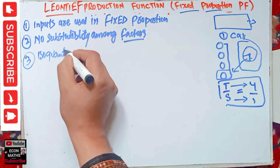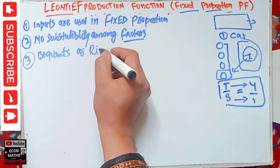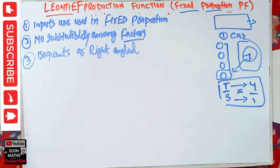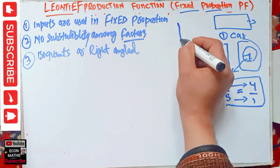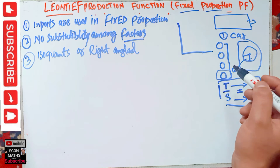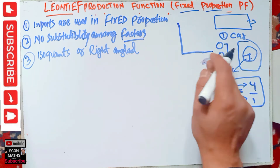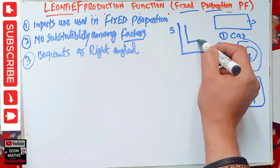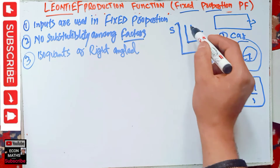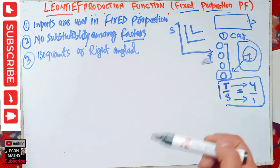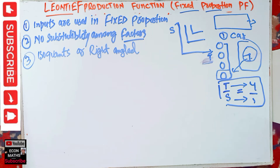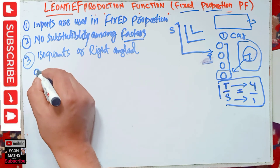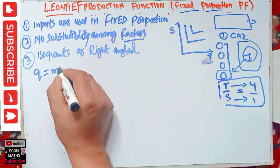A third important property is that the isoquants generated are right-angled, or L-shaped. We will see this briefly. First, let us see how we write this production function in mathematical form.